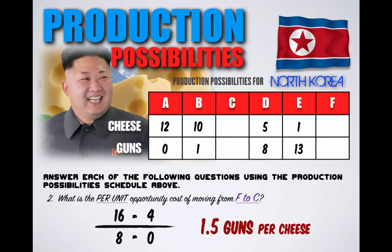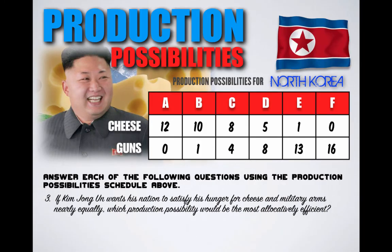That's some expensive cheese. Question 3: If Kim Jong-un wants his nation to satisfy his hunger for cheese and military arms nearly equally, which production possibility would be the most allocatively efficient? This decision is defined by North Korea's social goals and values. Because Kim Jong-un makes all the decisions in this command economy, he wants as close to an equal amount of cheese and guns produced at one time. According to the schedule, the most allocatively efficient combination would be point D, where North Korea would produce 8 guns and 5 units of cheese.